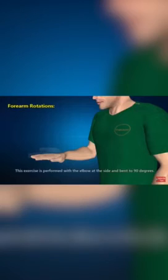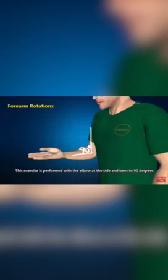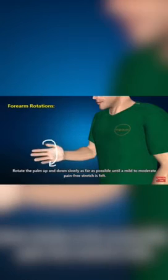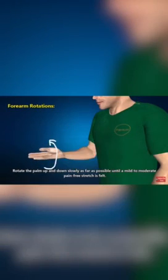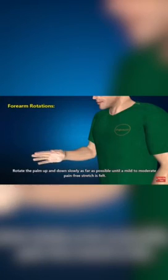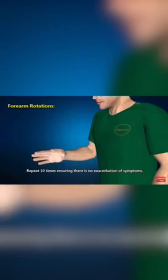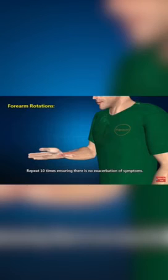Forearm rotations. This exercise is performed with the elbow at the side and bent to 90 degrees. Rotate the palm up and down slowly as far as possible until a mild to moderate pain-free stretch is felt. Repeat 10 times ensuring there is no exacerbation of symptoms.